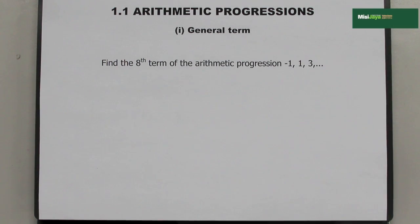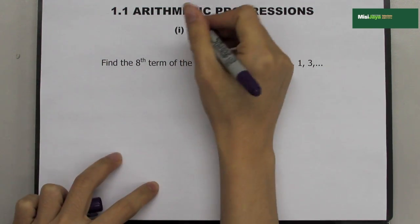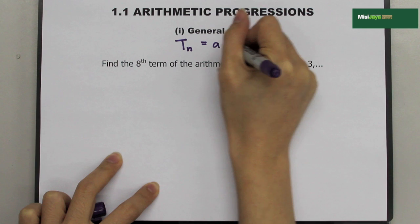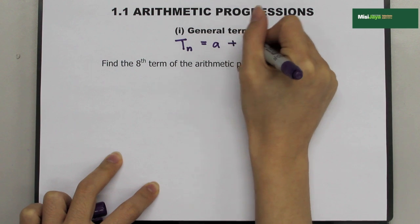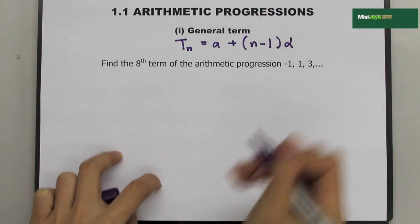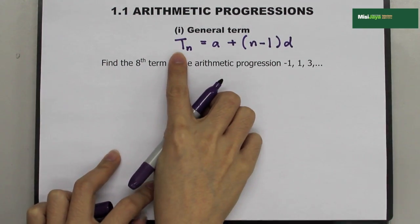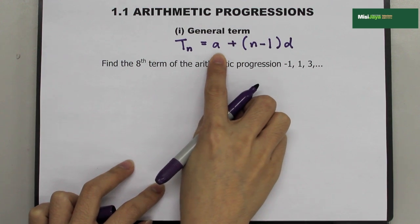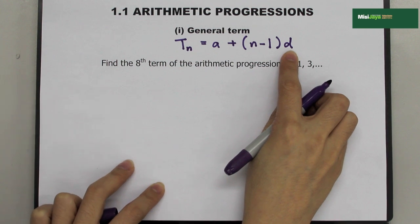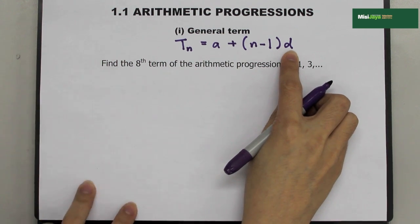Today, we're going to learn about arithmetic progressions. The general term for AP is TN equals A plus N minus 1, times D. T stands for term, A stands for the first term, and D stands for the common difference.